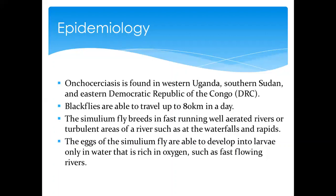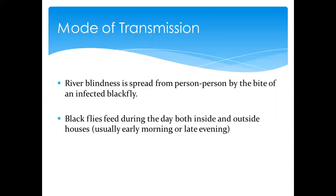The eggs of the Simulium fly develop into larvae only in water rich in oxygen — that's why fast-moving turbulent water is required, because oxygen mixes with the water. River blindness is spread from person to person through the bite of the vector, the black fly. The black fly feeds during the day, both inside and outside the house, usually during morning hours or late evening — a significant difference from the Anopheles mosquito, which has a nocturnal tendency.